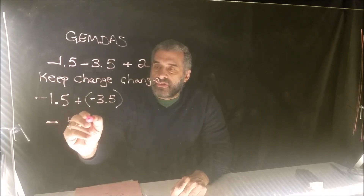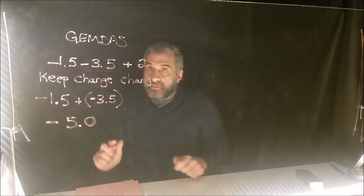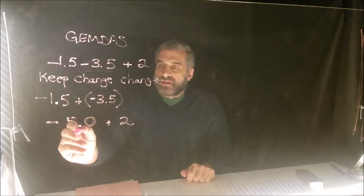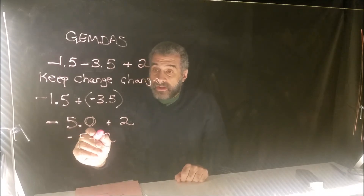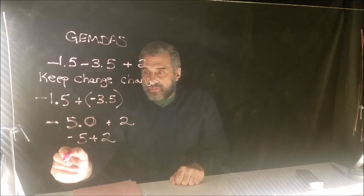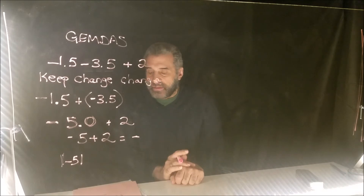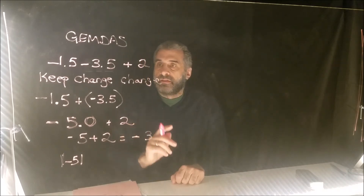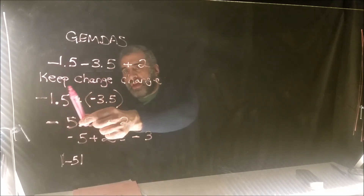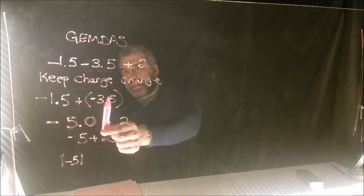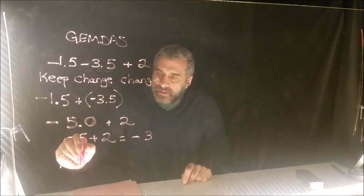Now they have the same sign, so we add: negative 1.5 plus negative 3.5 equals negative 5. Then we add that result to 2: negative 5 plus 2. The absolute value of negative 5 is 5, which is greater, so the answer is negative. We subtract to get negative 3.